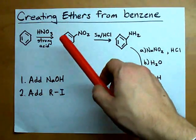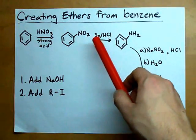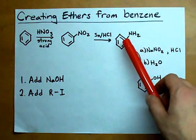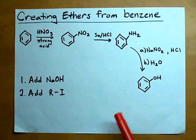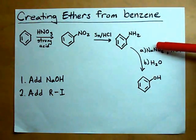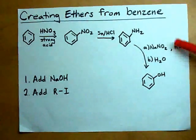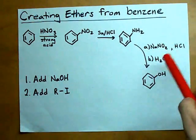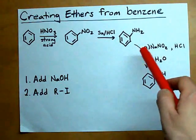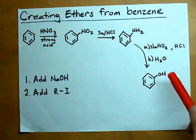Then if you react that with HCl with tin, it actually helps to reduce it into aminobenzene. And then if you treat that with sodium nitrite and HCl, and then you add water or transfer that product into water, you'll actually end up with phenol.